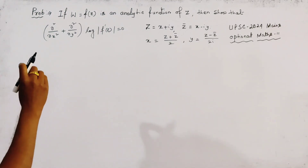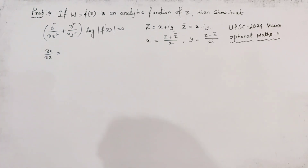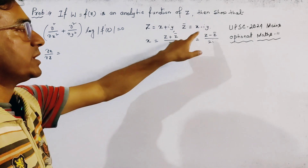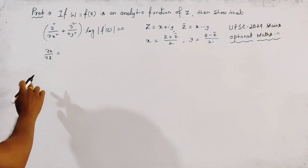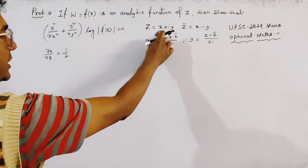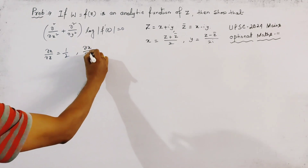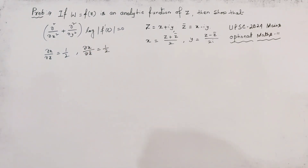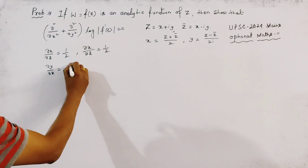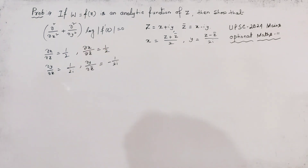Now we find ∂x/∂z. Since x is a function of both z and z̄, we use partial derivatives. Differentiating x = (z + z̄)/2 partially with respect to z gives ∂x/∂z = 1/2, and similarly ∂x/∂z̄ = 1/2. From y we get ∂y/∂z = 1/(2i) and ∂y/∂z̄ = −1/(2i).